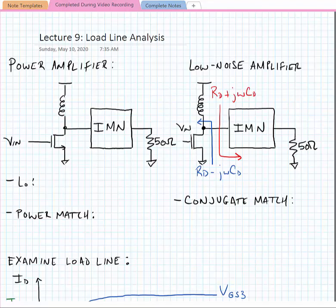Typically when we look into a transistor's drain, we see some real part r_d and some capacitive part of the impedance j omega c_d. So we design a matching network that transforms 50 ohms to r_d plus j omega c_d.